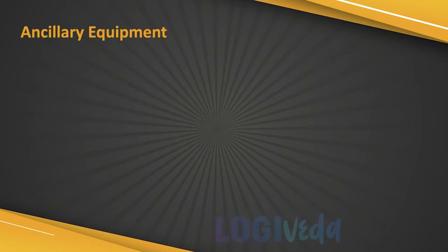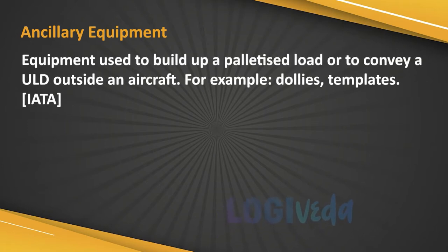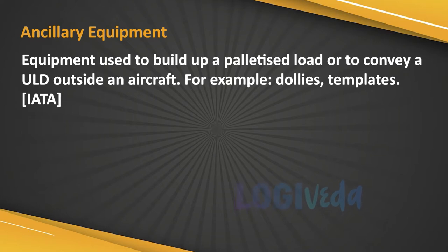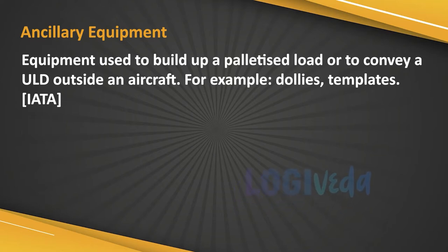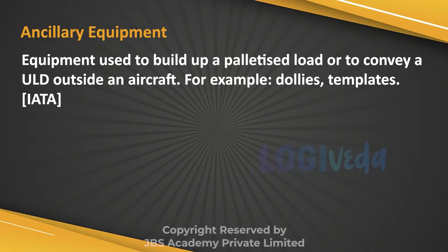Ancillary equipment: Equipment used to build up a palletized load or to convey a ULD outside an aircraft. Examples include dollies, containers, templates, etc.